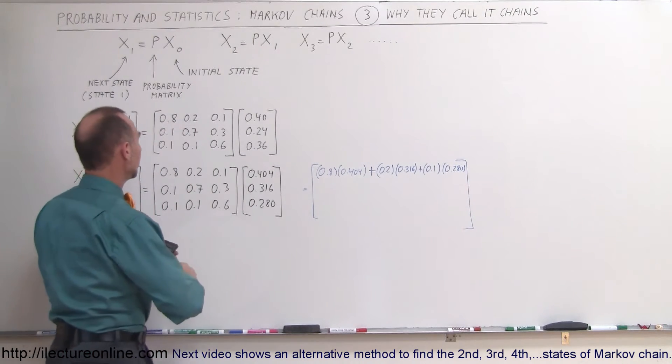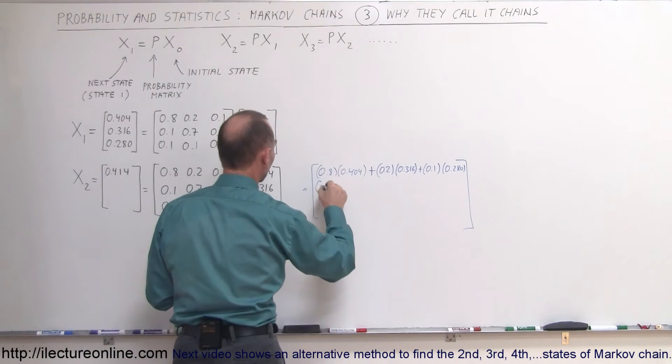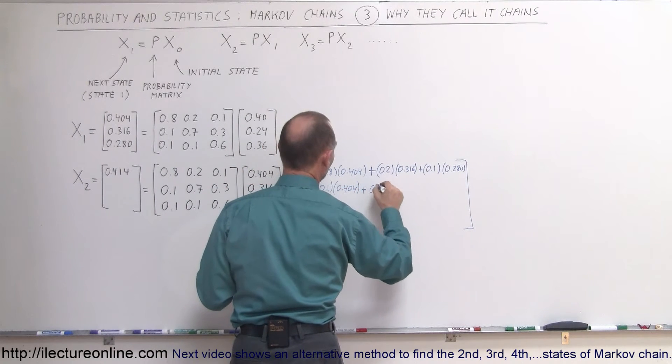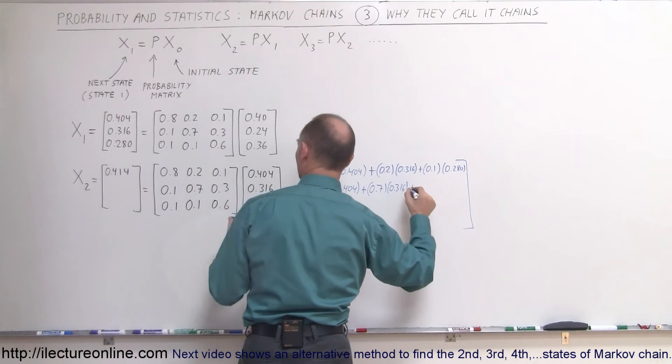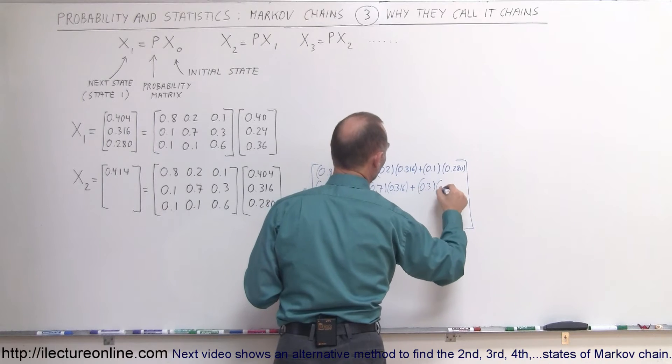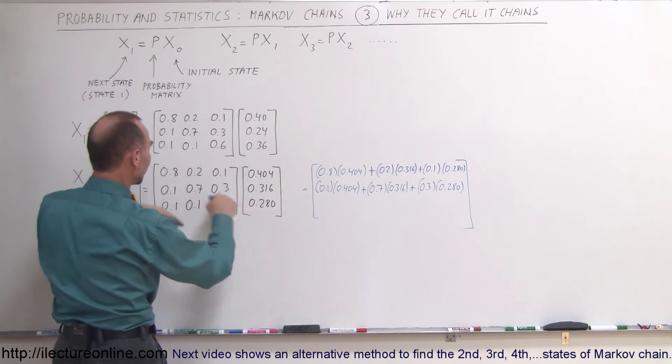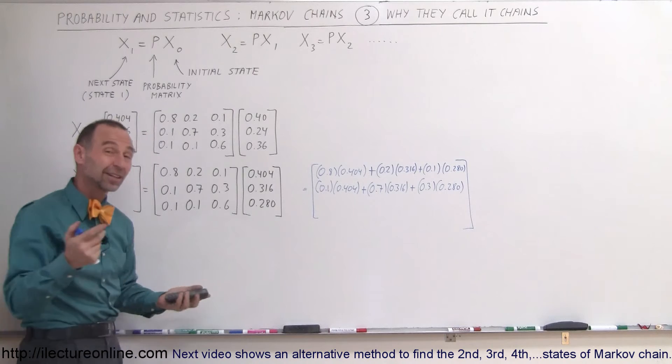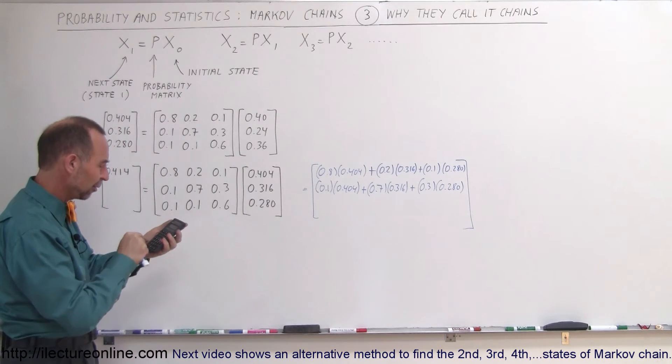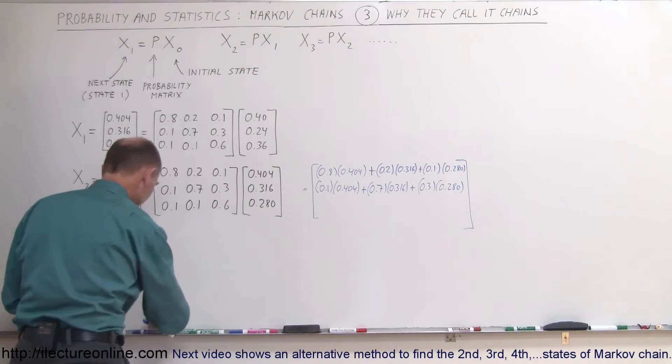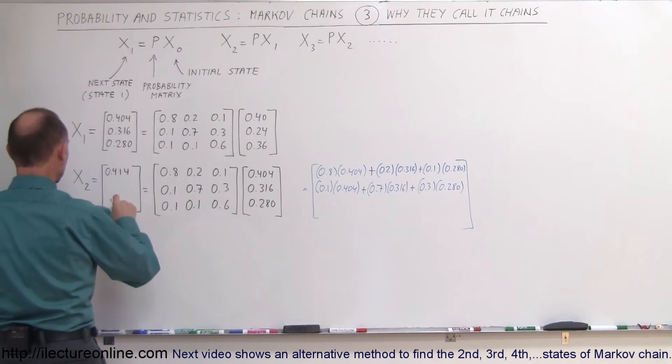Next. Now we're going to multiply this row times this column. So it gives us 0.1 times 0.404 plus 0.7 times 0.316 plus 0.3 times 0.280. So you go horizontally here and vertically there. Let's calculate: 0.1 times 0.404 plus 0.7 times 0.316 plus 0.3 times 0.28 equals, so this would be 0.346.